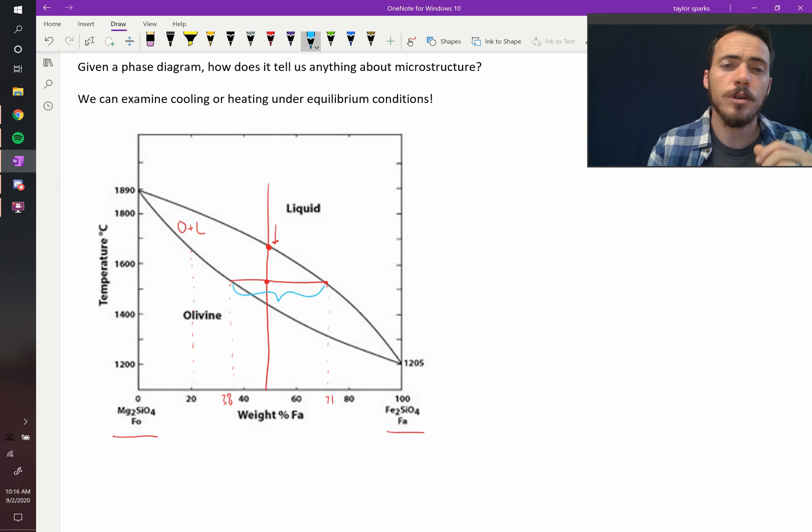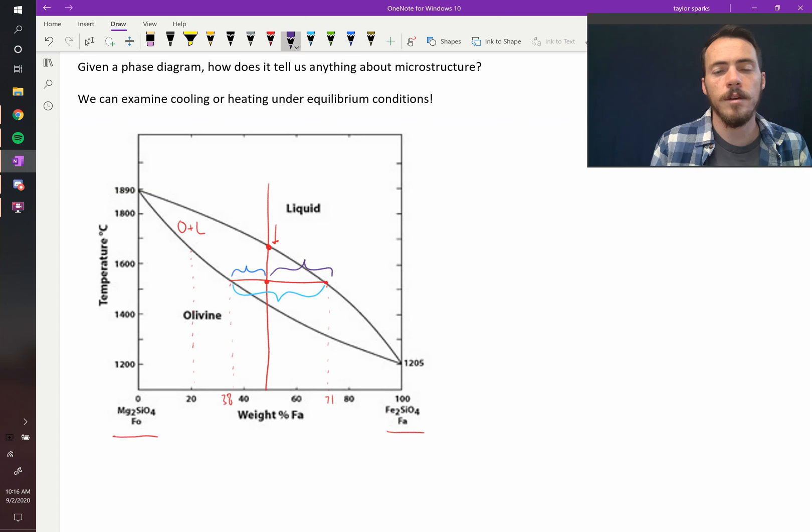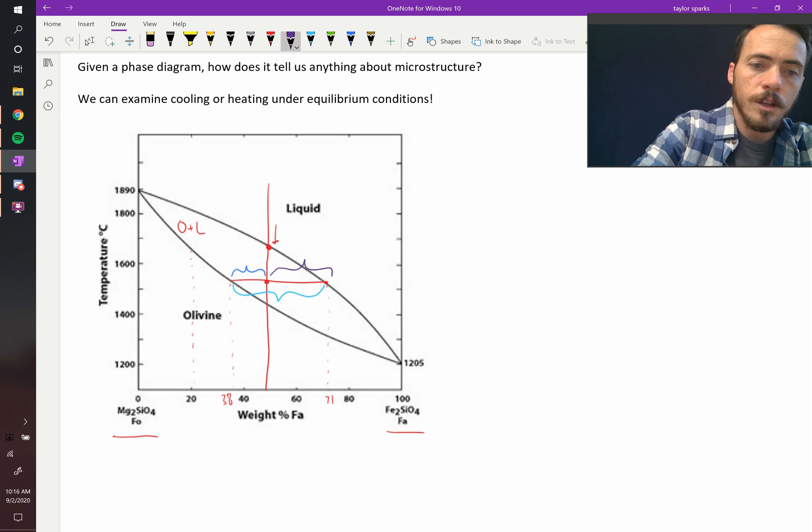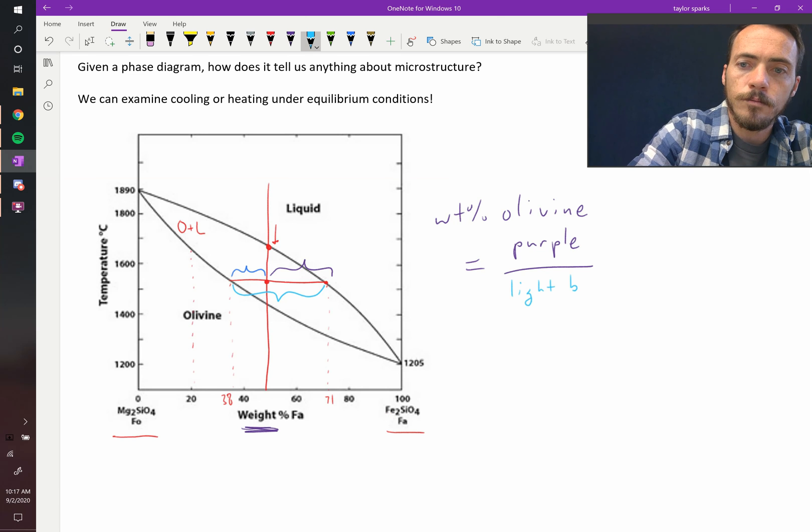Then, you get the fraction of each phase by figuring out the length of the upper segments. This segment right here, and this segment right there. Okay? So, the amount of olivine, the weight percent, since this plot is given in weight percent, we're going to calculate the weight fraction of olivine, is going to be equal to the purple line divided by the light blue.